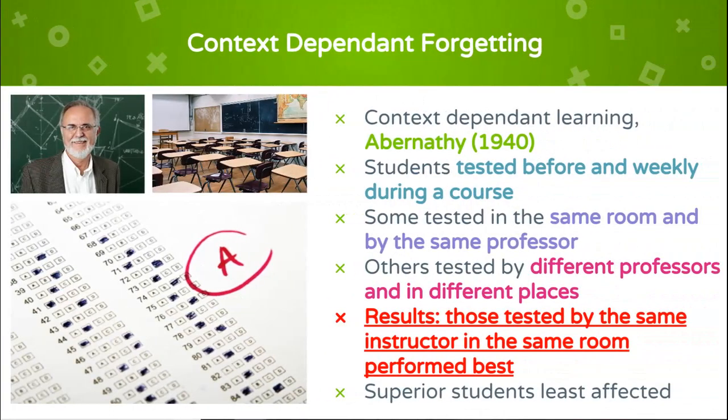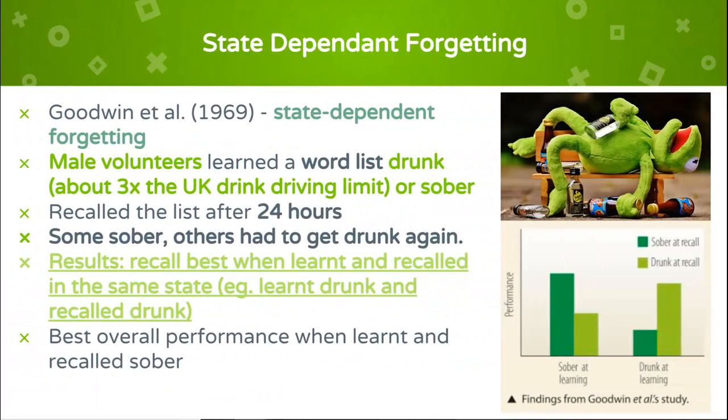Another example of context-dependent learning is a study by Abernathy (1940). She arranged for students to be tested before and weekly during a course. Some were tested in the same room and by the same professor, while others were tested by different professors and in different places. Those tested by the same instructor in the same room performed best. She also found that superior students were affected the least by the changes, and inferior students the most.